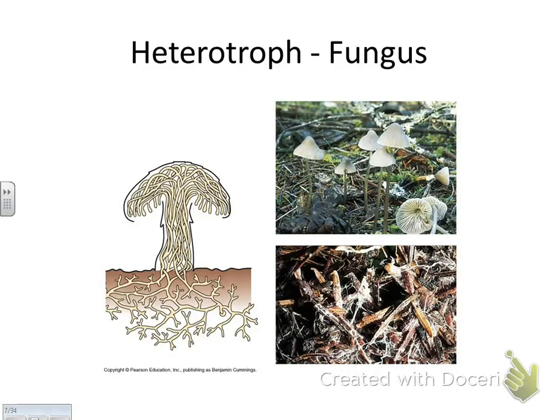Plants have this really awesome ability. They can take in sunlight, take in water, and make their own food. Picture you laying out by the pool, drinking a glass of water in the sun rays, and you're making sugar — well, you don't do that, but plants do. Plants do what's called photosynthesis: they take in sunlight energy and water, take in CO2, and they make glucose.